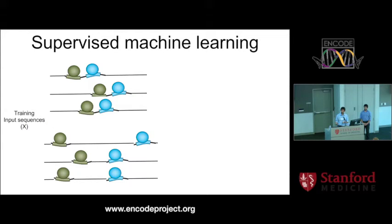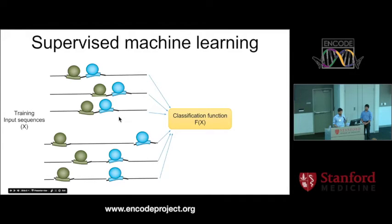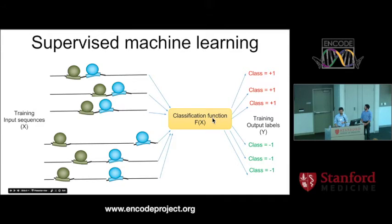This is where we turn to supervised machine learning. The basic idea for supervised machine learning is, in this case, it's a classification task. You have two sets of regions. In this case, this class contains TFs with fixed spacing, and this class contains the same two TFs with variable spacing. Our goal is to take these various sequences belonging to these two classes, learn a function, a classification function that can take these sequences and learn a mapping to their class labels. Take a sequence and predict that it's class one or class negative one.